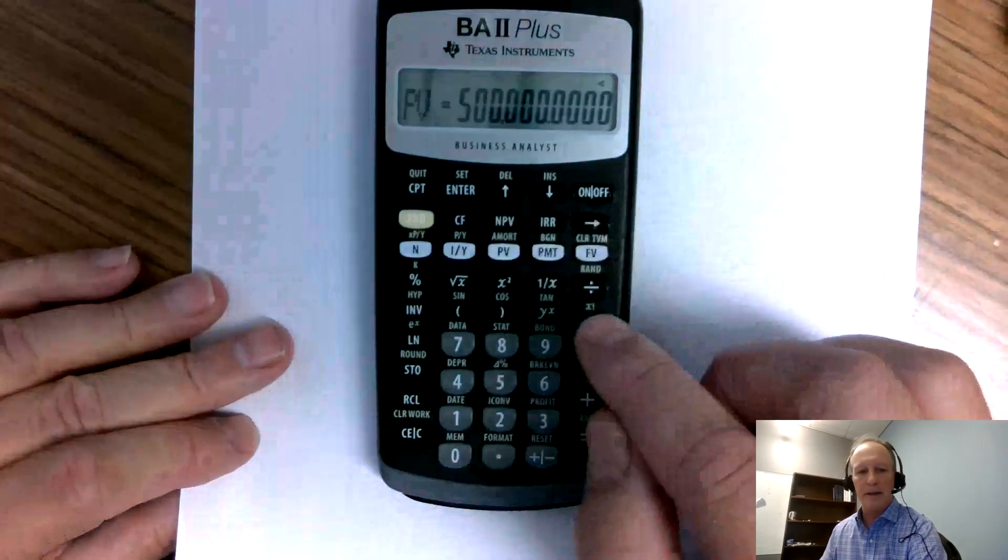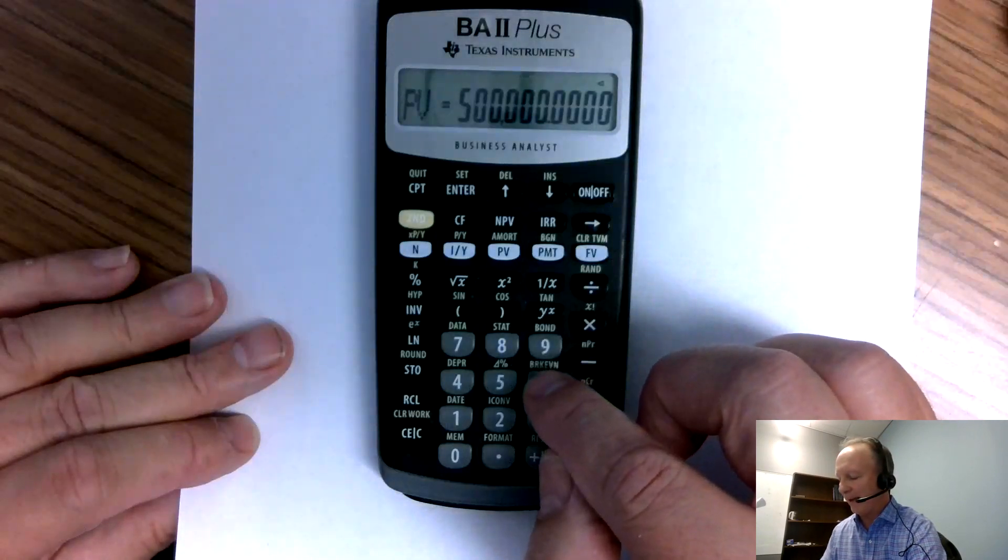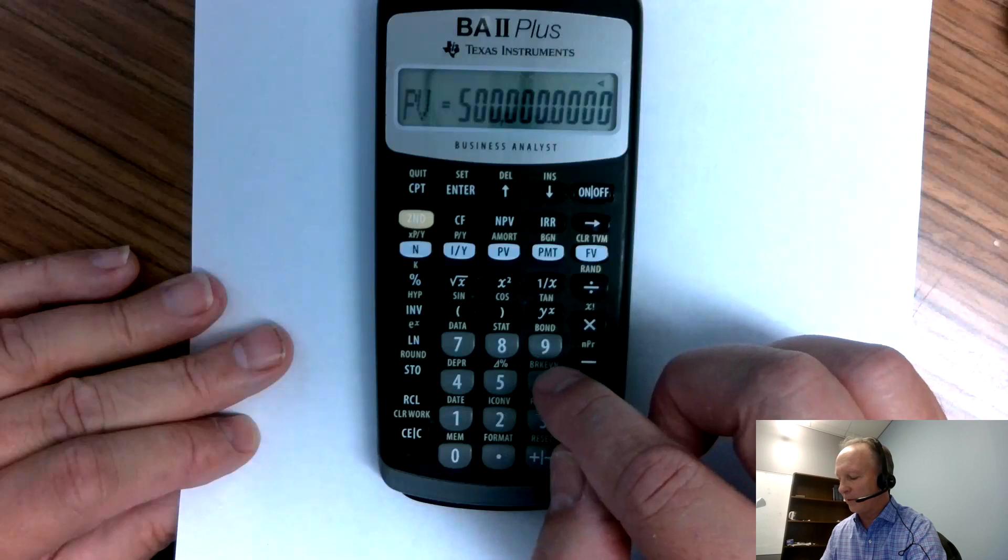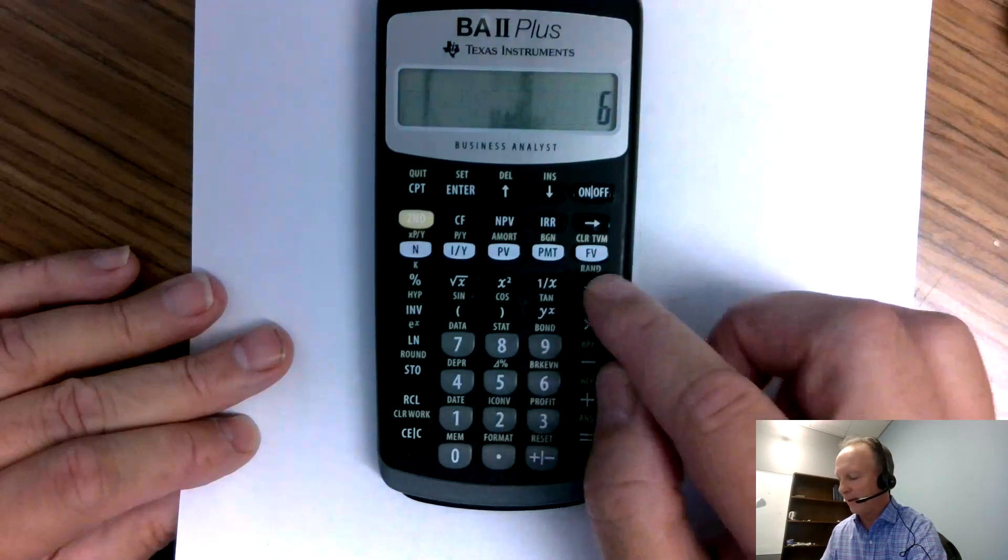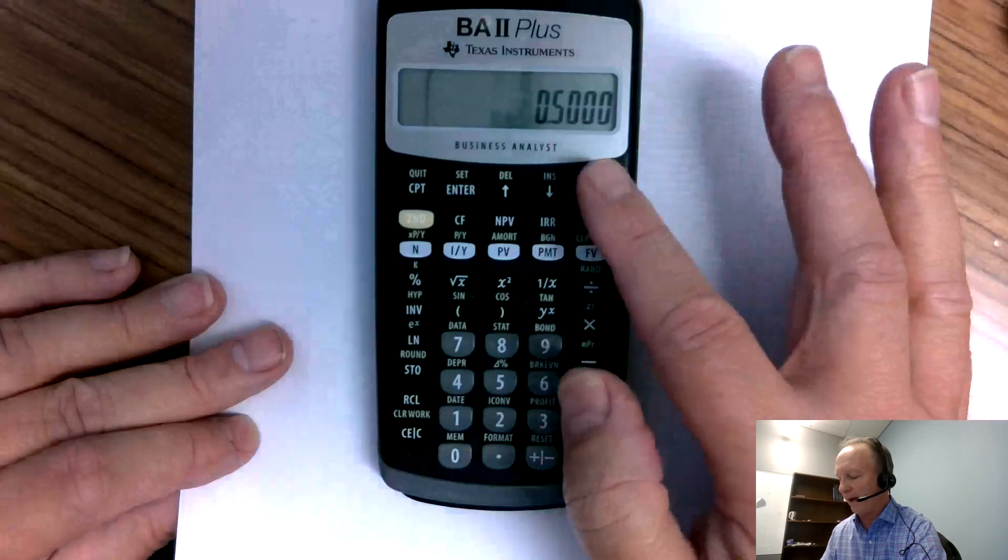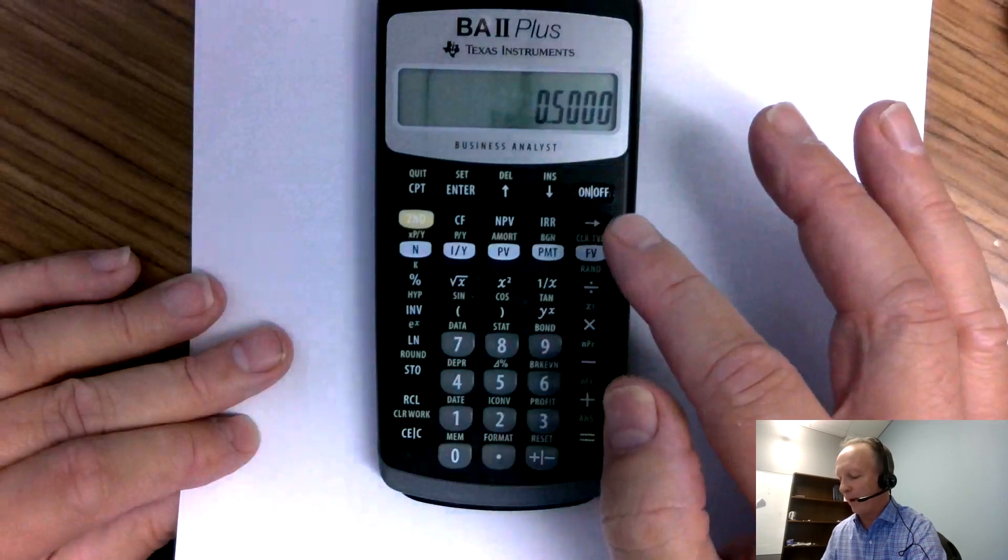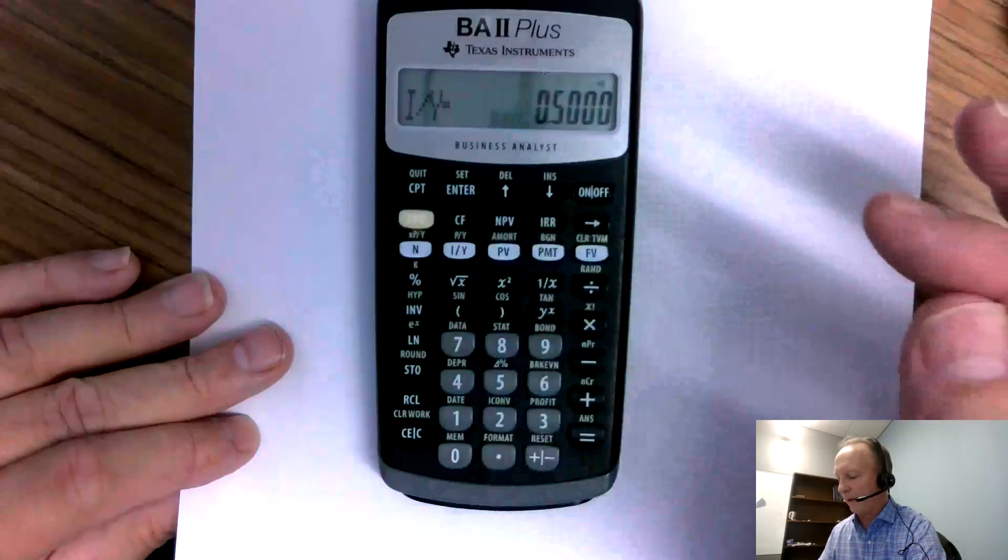Okay, the interest rate is 6%, so we're going to type in 6. However, it's 6% per year and we're doing monthly payments. So we want to do 6 divided by 12, and that equals 0.5. So it's 0.5 per month, so we're going to use 0.5 for our I/Y.